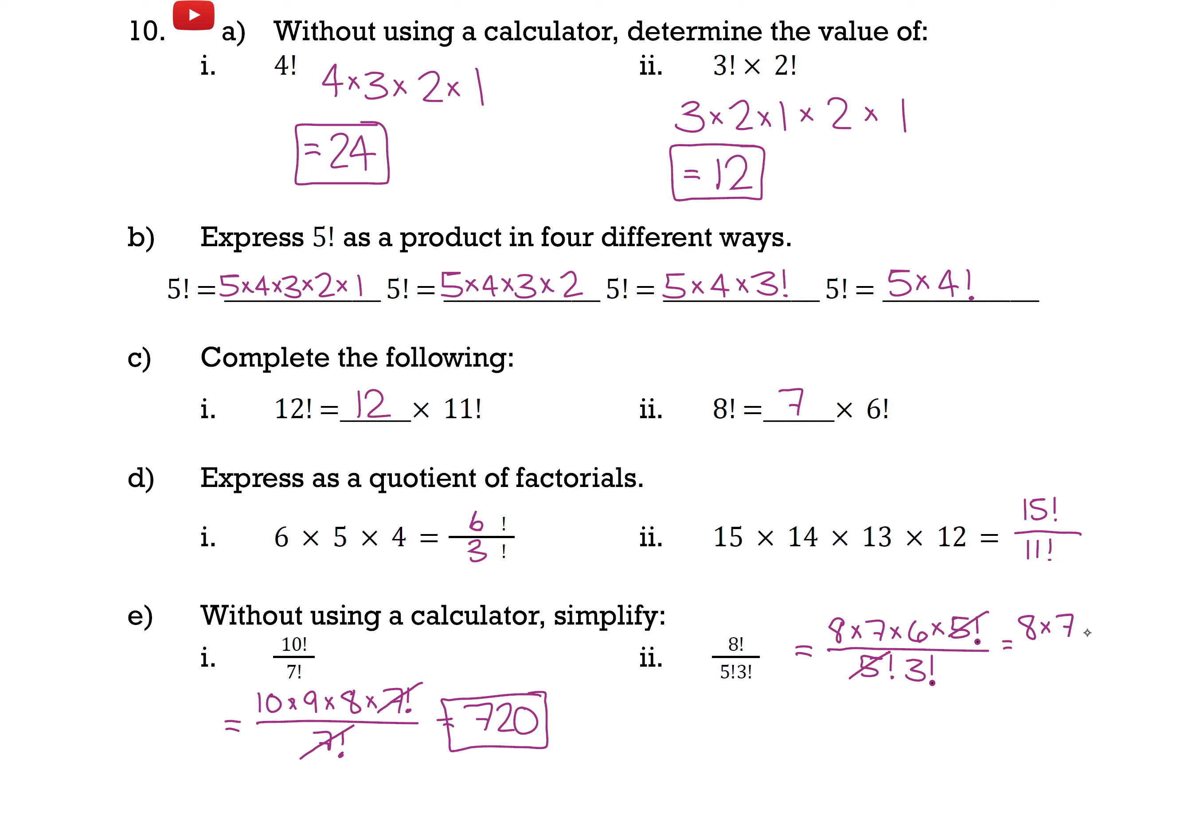So I have 8 times 7 times 6 up top. And then 3 times 2 times 1 down below. But remember that times 1 doesn't actually do anything to the product. So 8 times 7 times 6 ends up getting us to 336. And 336 divided by 6, this will end up being 336 divided by 6. And that ends up getting to a final result of 56.